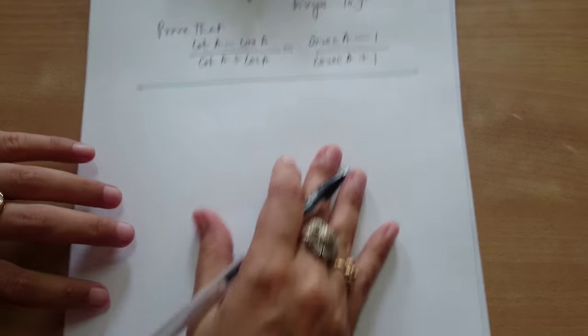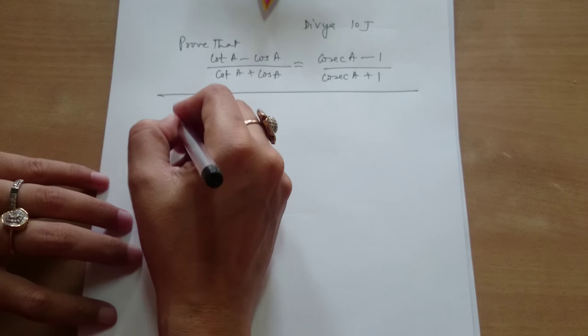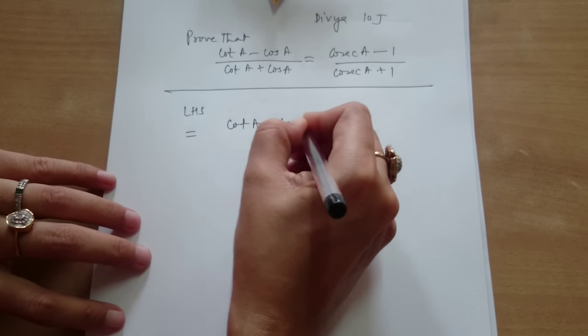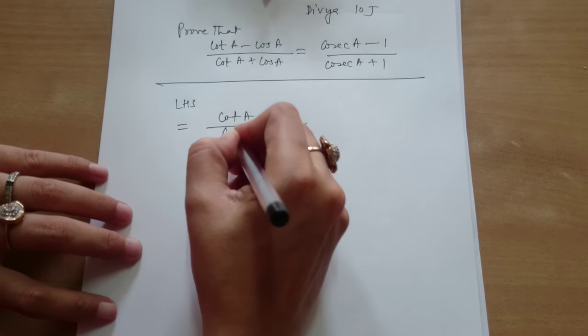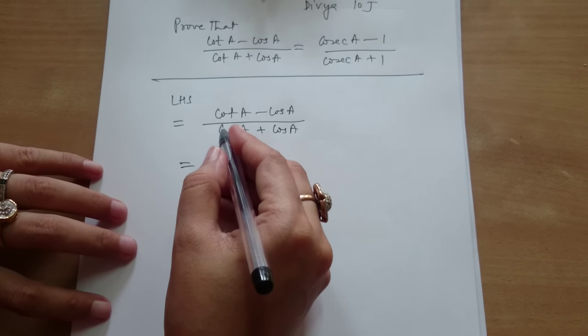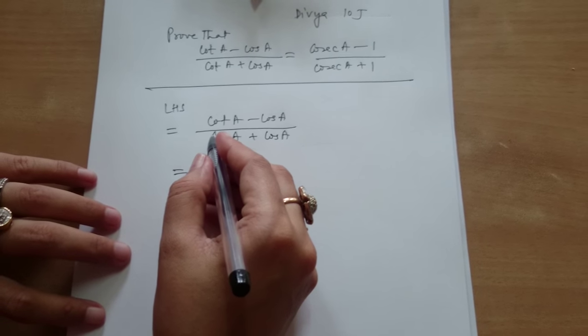Yes, how will you do this? First we take LHS. Cot A minus cos A upon cot A plus cos A is equal to... What is cot A? Cos A upon sine A. Right.